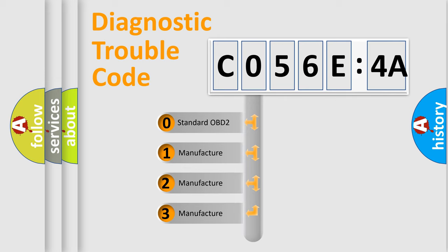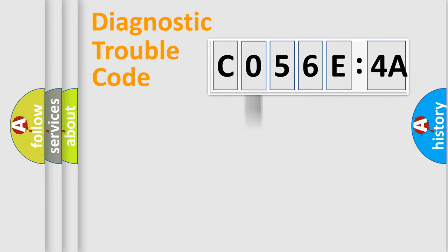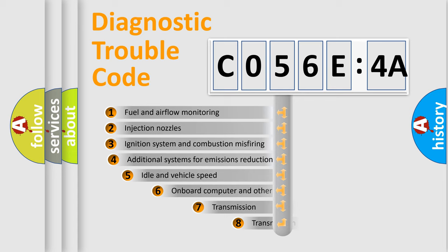If the second character is expressed as zero, it is a standardized error. In the case of numbers 1, 2, or 3, it is a more specific expression of the car-specific error.